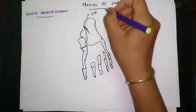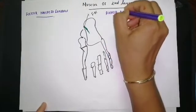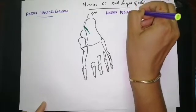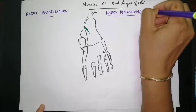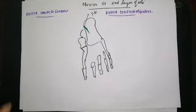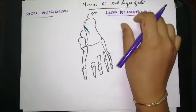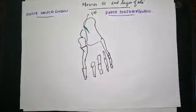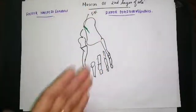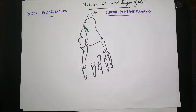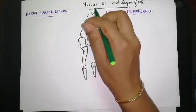There is another muscle here — the flexor digitorum longus — which is also arising from the posterior compartment. The flexor digitorum longus gets inserted into the four toes except the great toe, and it is originating from the tibia. Specifically, it originates from the upper two-thirds of the medial part of the posterior surface of the tibia, below the soleal line. The tendon of this muscle also passes downwards.